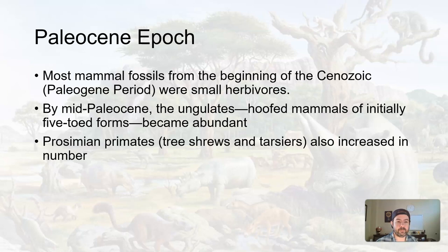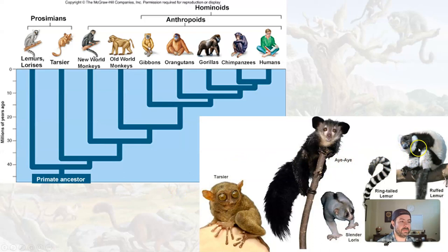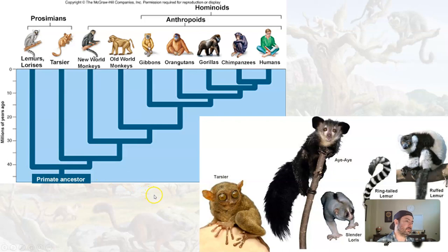Also during the Paleocene, prosimian primates — mostly little tree shrews and tarsiers — also increased in number. These prosimians include mammals like lemurs, lorises, and aye-ayes that we have now. These are not considered apes; we have apes and monkeys and then these things. But we do share an ancient common ancestor with the prosimians. These are some of the first tree-dwelling-like mammals, similar to later monkeys and apes, that first came to prominence on Earth.